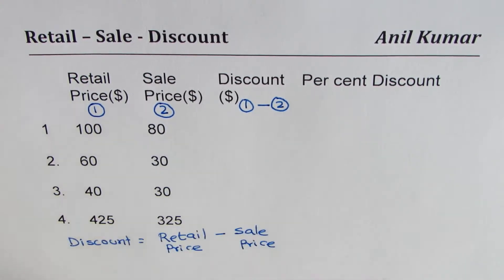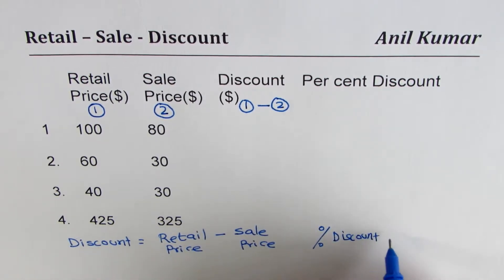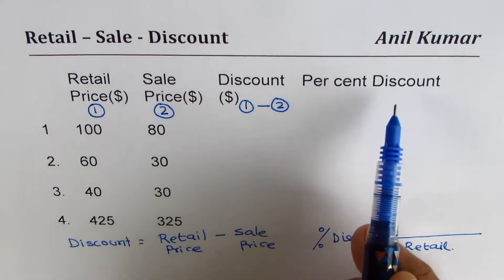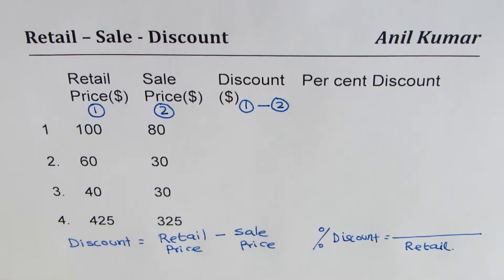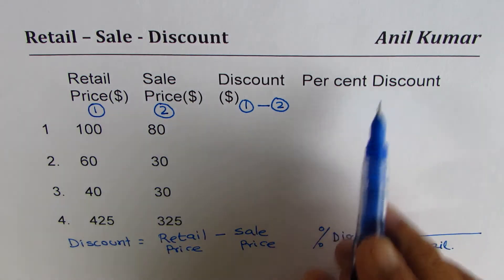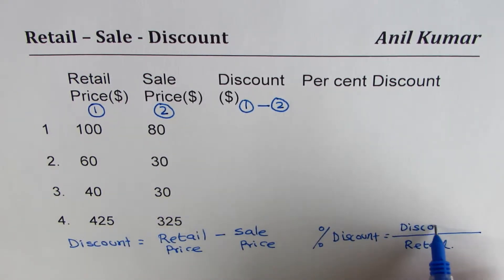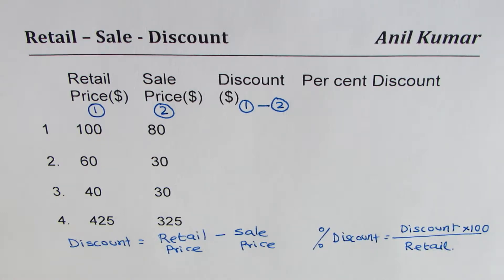Now, what is percent discount? Percent discount is always based on the retail price. It means out of 100 — for example, 80 out of 100 gives you 80 percent. So percent discount equals discount divided by the retail price, times 100, giving you the value as a percentage.